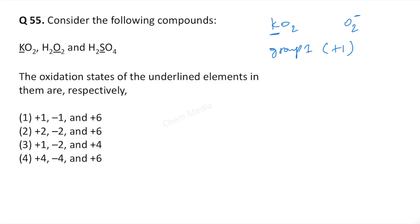If we put plus 1 for potassium, then we have to assume that each oxygen carries an oxidation state of minus half, so that the net will be 0 because KO₂ is a neutral compound. In neutral compounds, the sum of oxidation states must equal 0. This means that option 2 is wrong, option 4 is also wrong. So here it is plus 1.